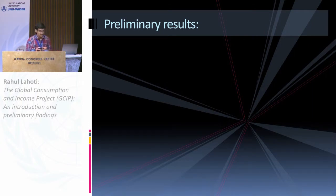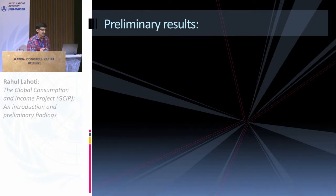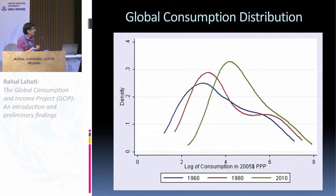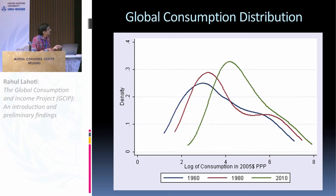Moving to preliminary results — there are several caveats: the data coverage in the 60s and 70s is limited, PPP issues as mentioned, and we do not currently make adjustments for non-coverage at the top level, though we plan to do that soon. This is a kernel density plot of log consumption. You will find that in the 80s there are two peaks, while in 2010 there is almost a single peak — basically the growth of China which has filled in the middle part.